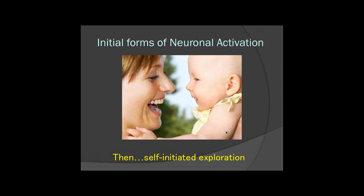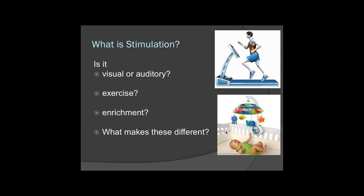So what are our initial forms of neuronal activation? Initially, a baby will stare at the mother. They get great visual input, auditory input hearing her talk, and that will make the baby want to reach out for the mother's face and begin self-initiated exploration. Stimulation can be visual, auditory, exercise, or enrichment — such as looking at a mobile that has music or lots of different kinds of objects. What makes them different? Exercise, like running on a treadmill, is going to increase blood supply to certain areas of the brain and muscles.